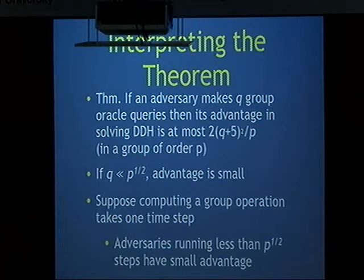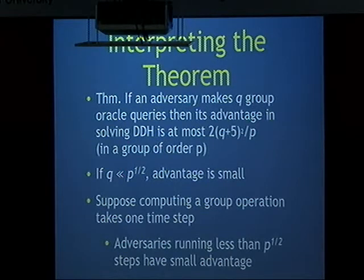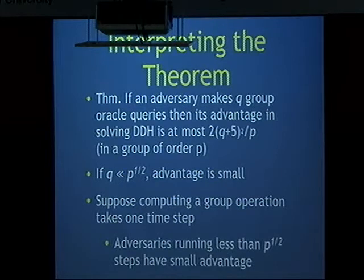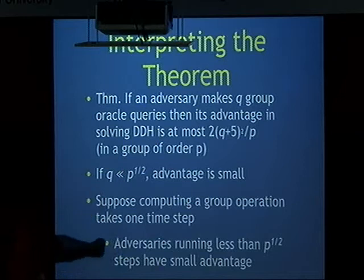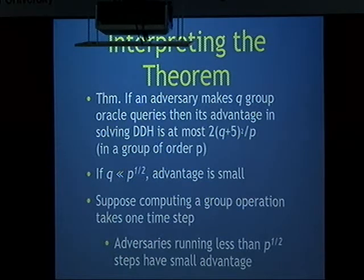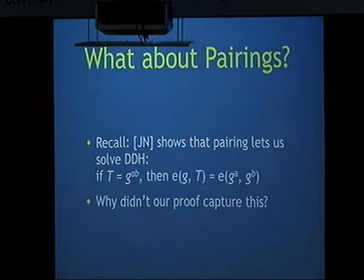In the real world, adversaries don't interact with group oracles, so we can't count their queries directly. But we can say the adversary can only perform one group operation per time step per Turing machine transition, so we can bound it that way. If the adversary runs for fewer than √p steps, it will have a small advantage in solving DDH generically. If the adversary is not generic, all bets are off as far as this theorem is concerned.